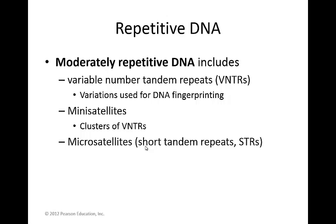We can also find some moderately repetitive DNA, and this includes several different things. It can include variable number tandem repeats, or VNTRs. These are going to be variations that are used for things like DNA fingerprinting — for things like paternity tests or forensic cases. Mini-satellites are going to be clusters of these VNTRs, and micro-satellites are going to consist of short tandem repeats, or STRs.